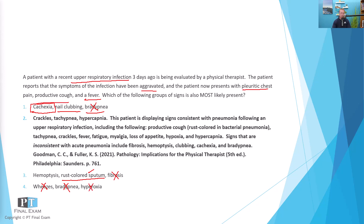That leaves us with the only correct answer: crackles, tachypnea, and hypercapnia. Crackles are like bubble wrap — you have fluid in the alveoli. Tachypnea occurs because the patient has to breathe faster and harder to get oxygen exchanged as their alveoli fill up with fluid. And finally, hypercapnia — too much carbon dioxide in the bloodstream — occurs because they're having difficulty with that oxygen exchange.